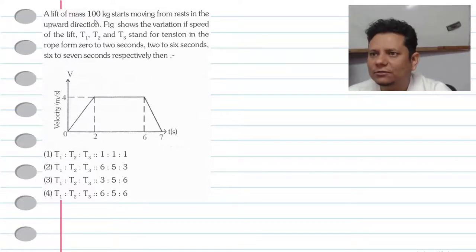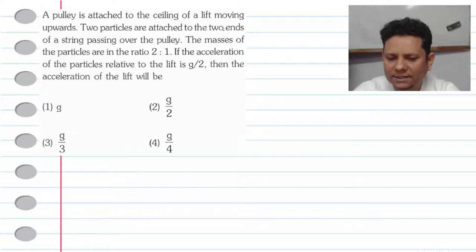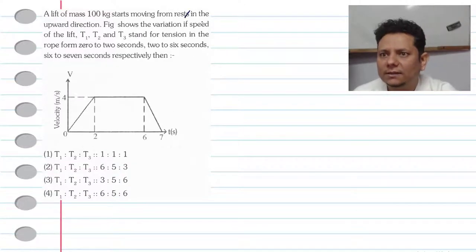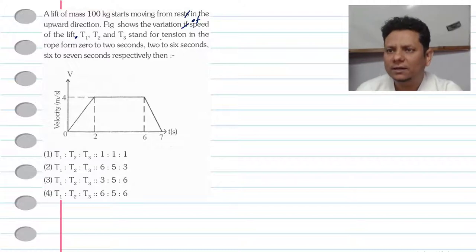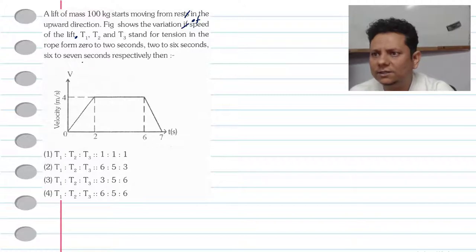Next question. The question says the lift of mass 100 kg starts moving from rest in the upward direction. Figure shows the variation of speed of the lift. T1, T2, T3 stand for tension in the rope from 0 to 2 seconds, 2 to 6 seconds, and 6 to 7 seconds respectively. Then we have to find the ratio of T1, T2, T3.